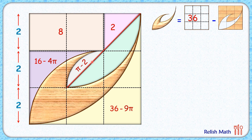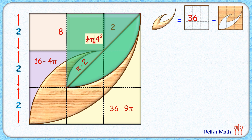Using the same logic for the area of the green shaded region, we take this green quadrant and subtract the area of the triangle. The green quadrant has radius 4 centimeters, so its area is one-quarter times π times 4 squared, which is 4π.